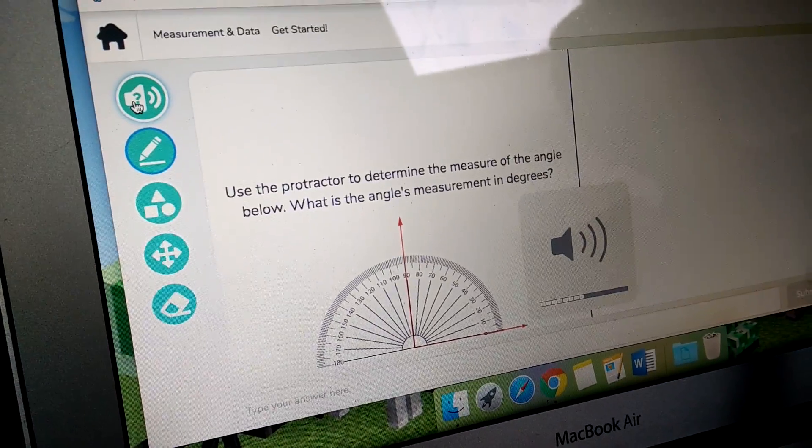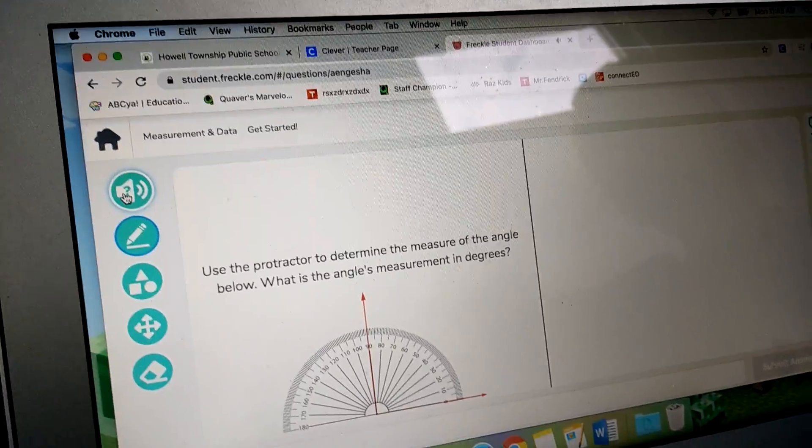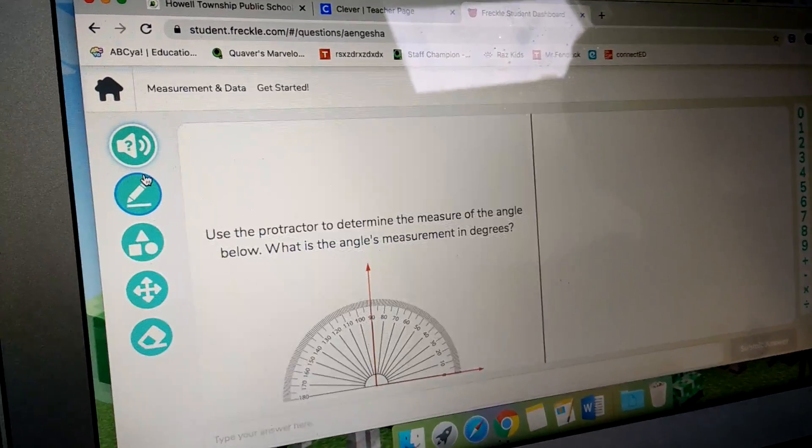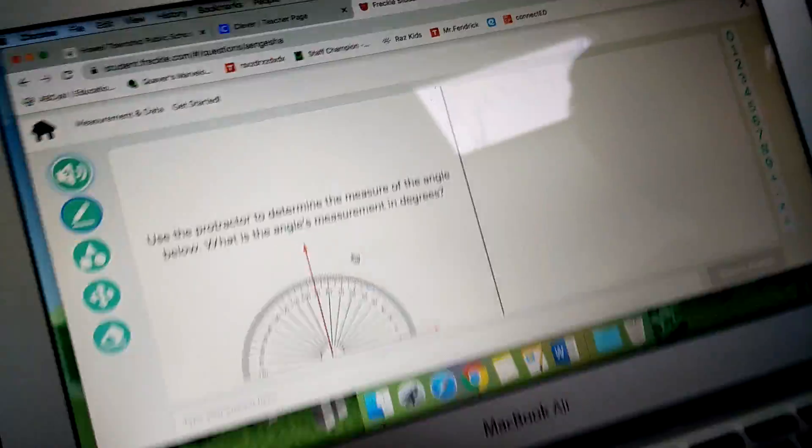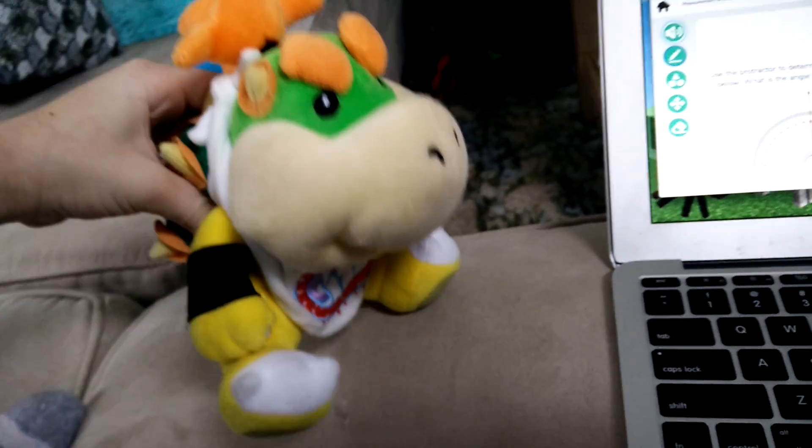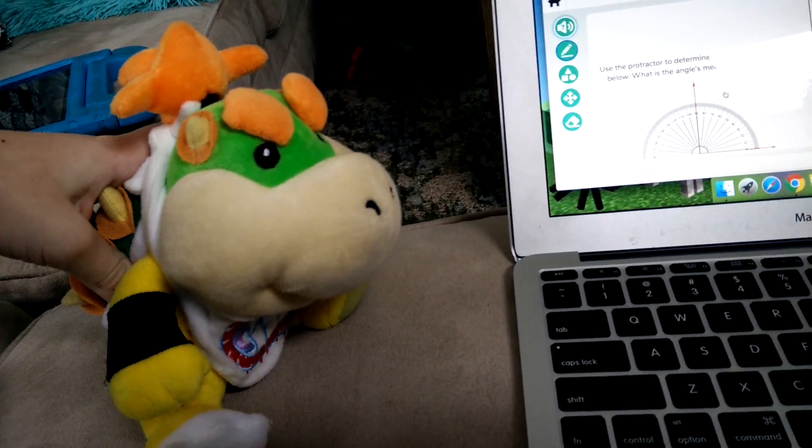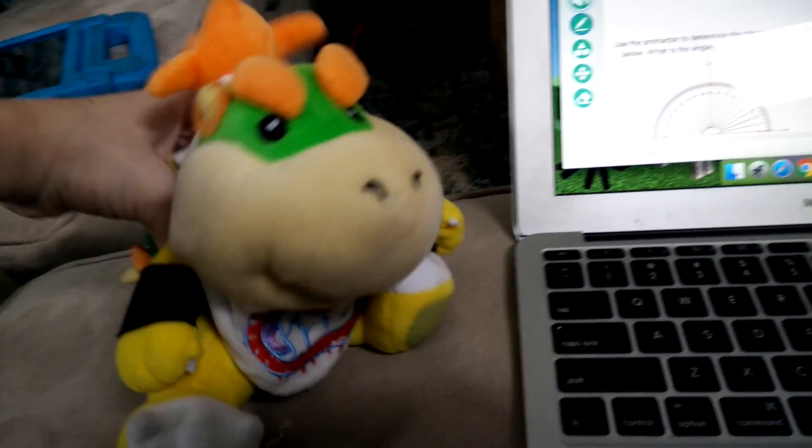Use the protractor to determine the measure of the angle below. What is the angle's measurement in degrees? Uh, I'm... Use the protractor to determine the measure of the angle below. Puppet, do you know? Yeah! Puppet! Puppet! Do you know the answer this time? No! No! I want to keep this page open.